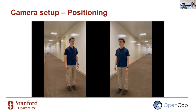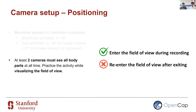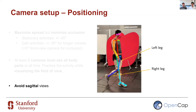This video is mainly for capturing gait data, but you can work in a very similar way for any type of activity. At least two cameras must see all body parts at all times. It is fine to have participants enter the field of view while recording, but you should not have them re-enter after exiting. We recommend avoiding views that are too sagittal, as they induce a lot of occlusion and may lead to poor pose estimation results.